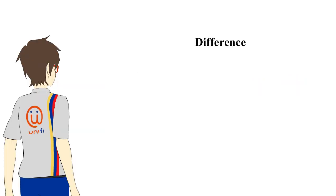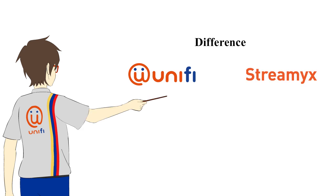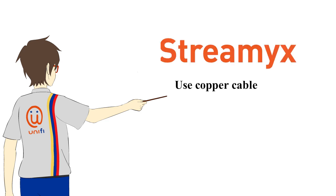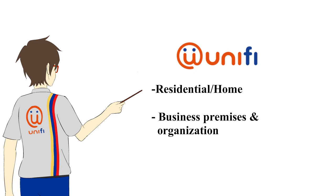What are the differences between Unify and C-Mix? Unify is using fiber optic cable while C-Mix is using copper cable. Unify is divided into two options: Unify for residential or home, and Unify for business premises or organization.